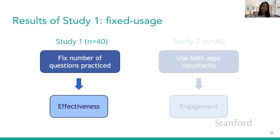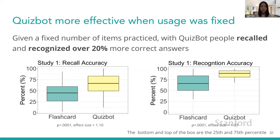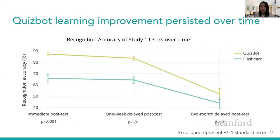From the first study, we found that given a fixed number of items practiced, with QuizBot, people recalled and recognized over 20% more correct answers. The difference was statistically significant for both recall and recognition accuracy. We also performed delayed post-tests one week and two months after the study, and found that although the gap became smaller, the difference between the two was still significant at two months. Therefore, the learning improvement brought by QuizBot persisted over time.